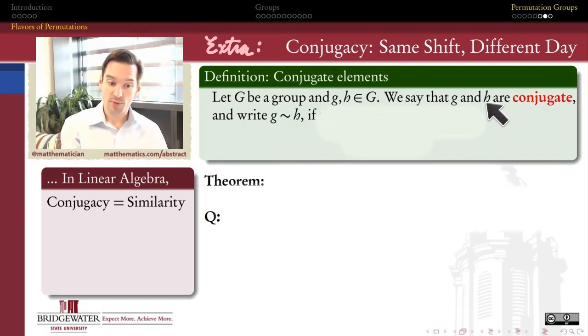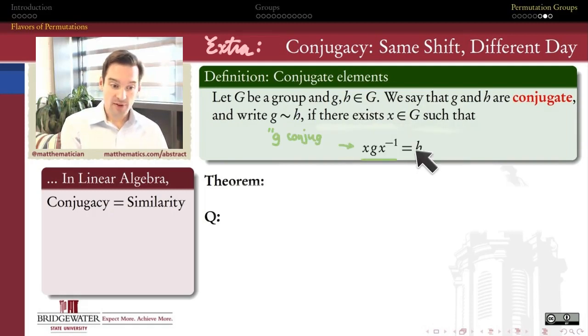And we say that two elements of a group G and H are conjugate if there exists a third element X, such that one of the elements is equal to the other with an X on one side of it, and the inverse of X on the other side of it. We call this operation here G conjugated by the element X.